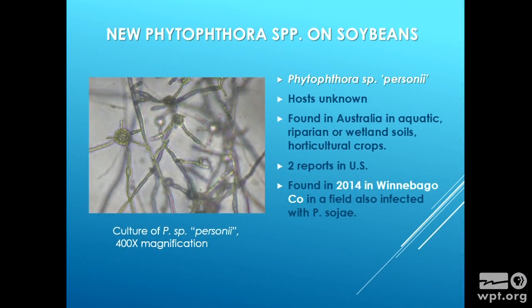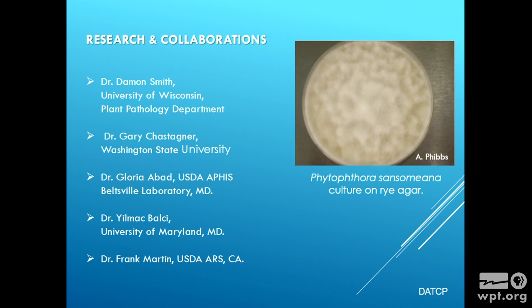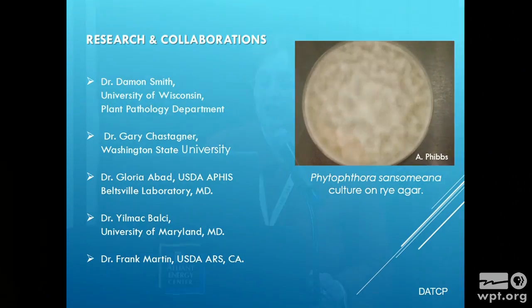This one was found in Eau Claire together with Phytophthora sansomiana. The last one, from Winnebago County in 2014, is Phytophthora personae. We don't know any of its hosts — there have only been two reports in the US, and originally it was found in Australia. I collect these organisms and send them to Damon Smith at UW and many other research collections, so they can study them further and determine which ones we really have to look out for.